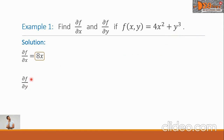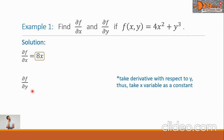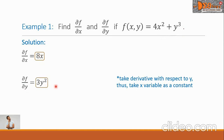Next is the partial derivative of f with respect to y. We take the derivative with respect to y, treating x as a constant. The derivative of 4x squared with respect to y is 0, plus the derivative of y cubed with respect to y is 3y squared. So f sub y equals 3y squared.